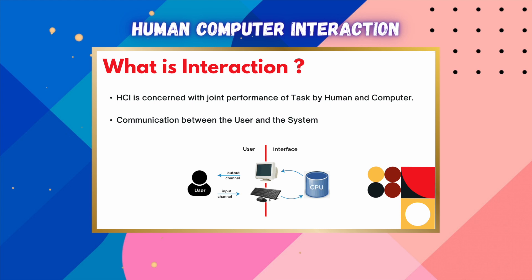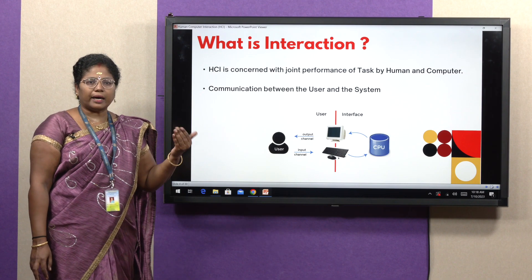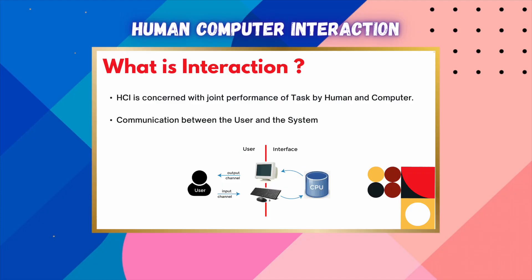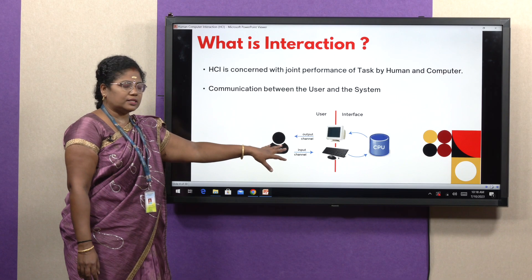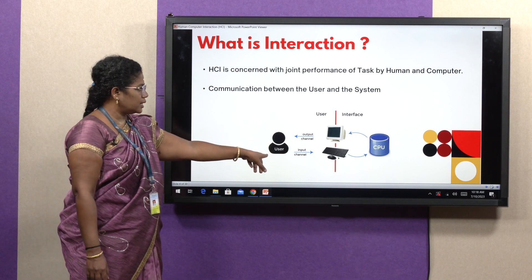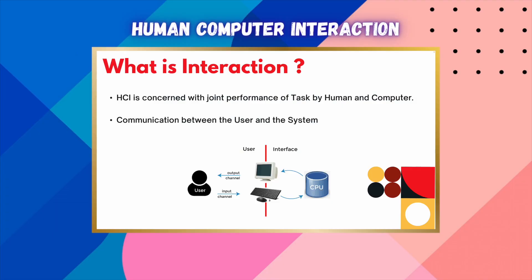Interaction is nothing but the performance of tasks given by human as well as the computer. The communication between the user and the system is clearly depicted through this diagram — the user interface shows how the user is communicating with the CPU through input and output channels.